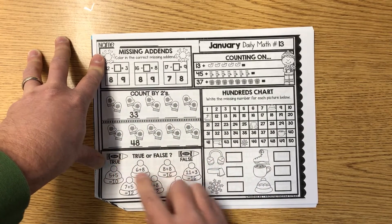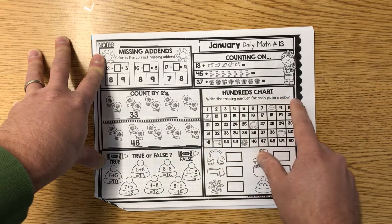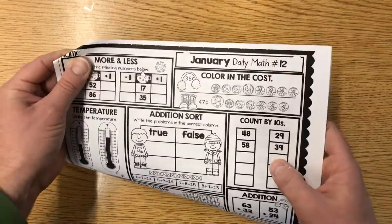True or false? True is in blue, false is in green. For these hundreds chart, write the missing number for each picture below. Right in there, plop it all in there. See if you can figure it out.